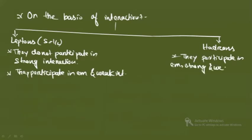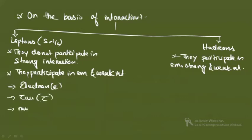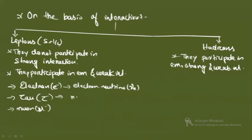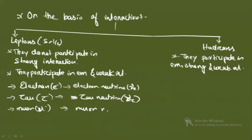Examples of leptons: electron, muon, and tau. Their associated antiparticles/neutrinos are: electron neutrino for the electron, mu neutrino for the muon, and tau neutrino for the tau. All neutrinos — electron, muon, and tau neutrinos — are also leptons.